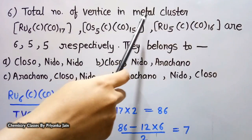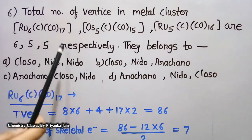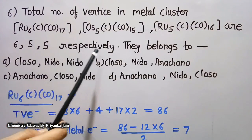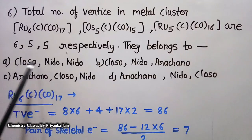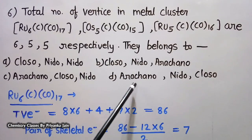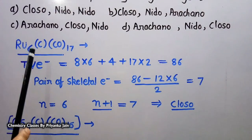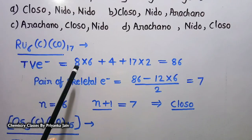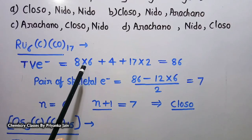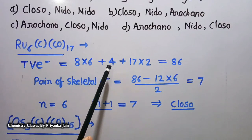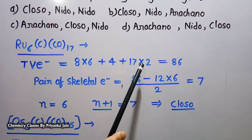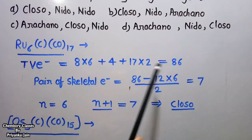The next question asks which structures are adopted by the metal clusters RU6C(CO)17, OS5C(CO)15, and RU5C(CO)16. For RU6C(CO)17: ruthenium has 8 valence electrons, so 8×6 = 48, plus 4 from carbon, plus 17×2 from the 17 carbonyl ligands, giving a total of 86 valence electrons.